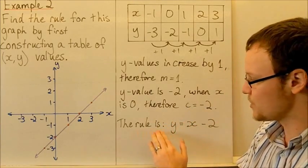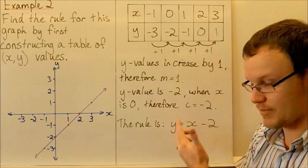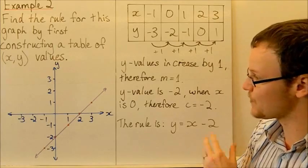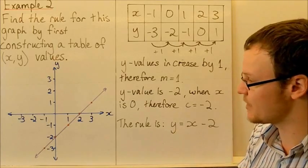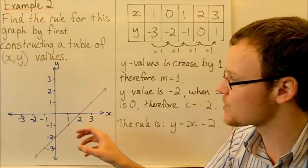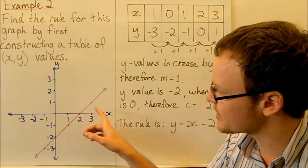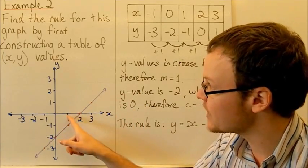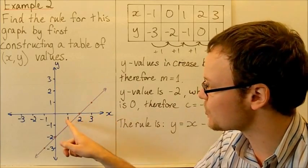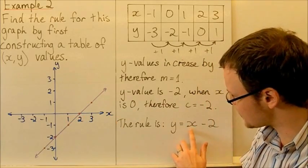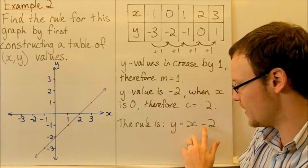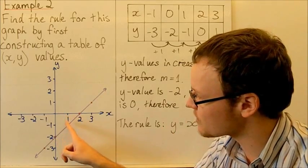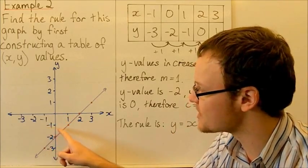So we can put our rule together: y equals x minus 2, because 1x is just x. Checking with x equals 1: 1 minus 2 equals negative 1, and our y value on the graph is indeed negative 1.